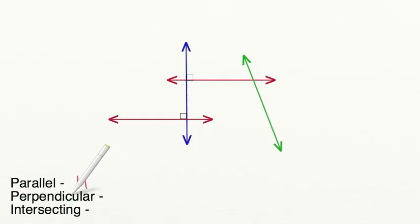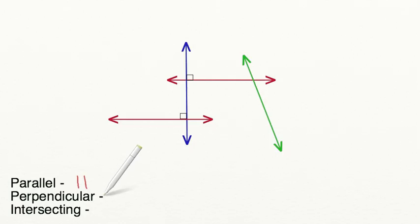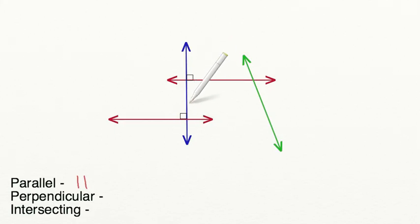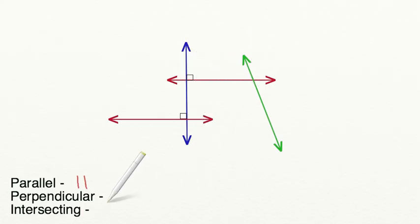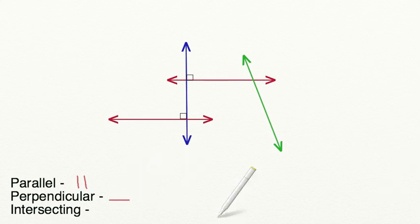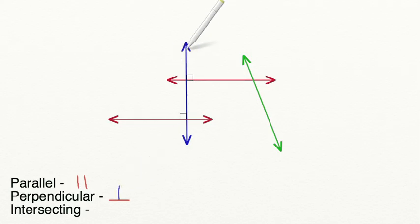Now let's see if we can find perpendicular lines. Remember, perpendicular lines have to be creating right angles. If we look, we can see that there are already squares in the corners of these angles, telling us that they're 90-degree or right angles. So this blue line is perpendicular to the red line. I'm going to draw my symbol for the red line and my perpendicular symbol to show the blue line.